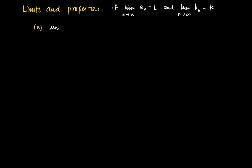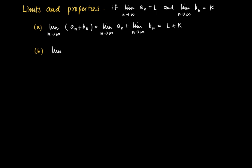One property is that if we add two sequences: the elements a_n tend to be close to l and the elements b_n tend to be close to k, so the elements a_n plus b_n tend to be close to l plus k. This is the first property — we can calculate the limit of the sum of two sequences once the separate limits are known.